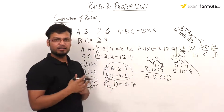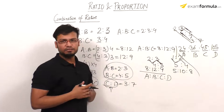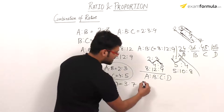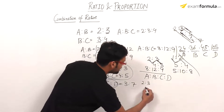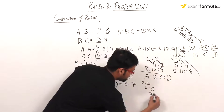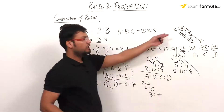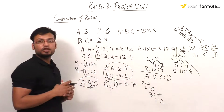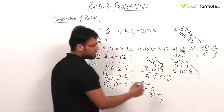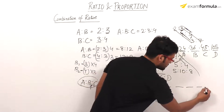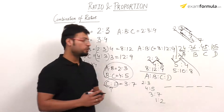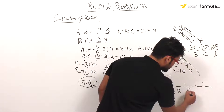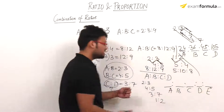If you have 5 quantities — for example 2 ratio 3, 4 ratio 5, 3 ratio 7, and 1 ratio 2 — and you need A ratio B ratio C ratio D ratio E, the same trick applies. For A, multiply all numerators: 2 times 4 times 3 times 1 equals 24. For E, multiply all denominators: 3 times 5 times 7 times 2 equals 210.